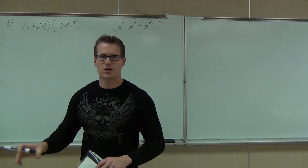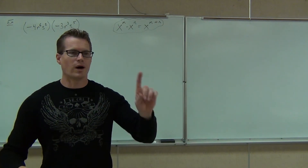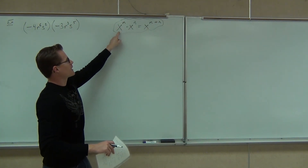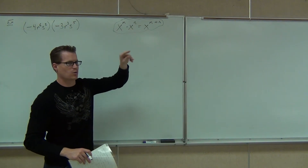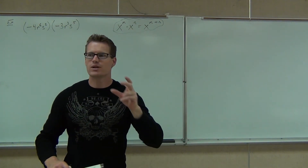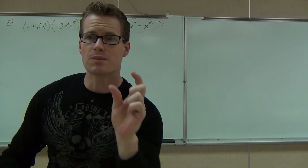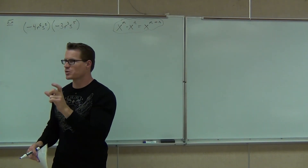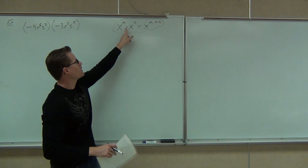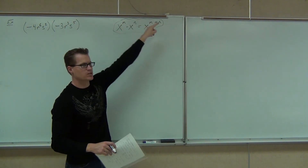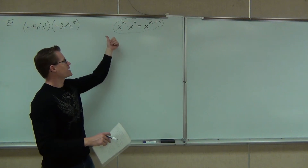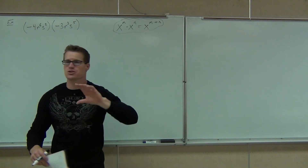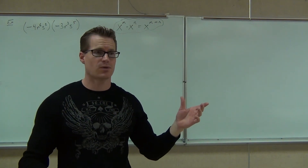Let's continue talking about exponents and their rules. We learned that if we multiply x to some power times x to some power — with common bases — we combine them into one base: x to the m times x to the n becomes x to the m plus n. So when you multiply common bases, you're actually adding those exponents, because you have x times x times x here and another x times x times x there, and you add up however many you have.